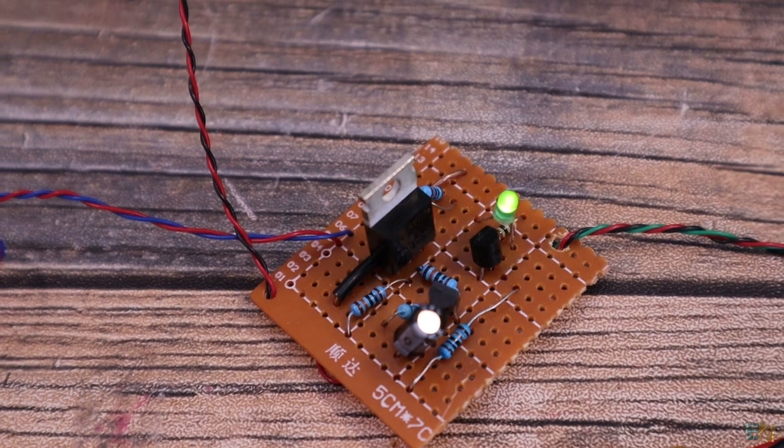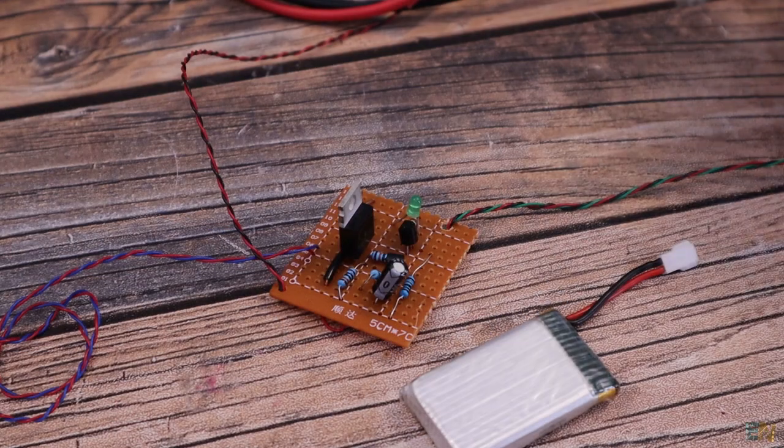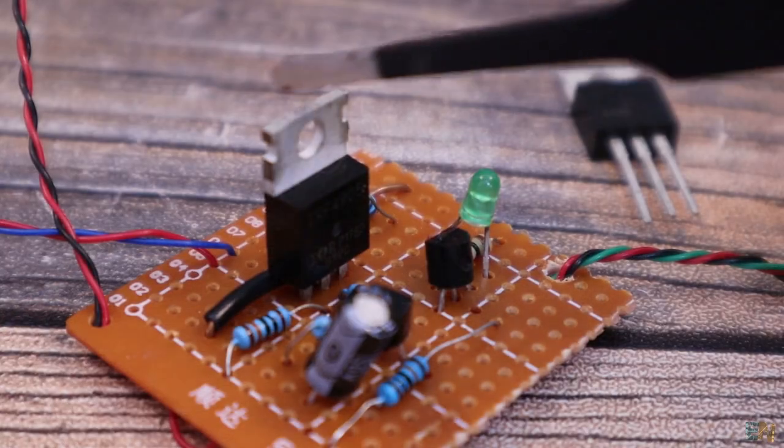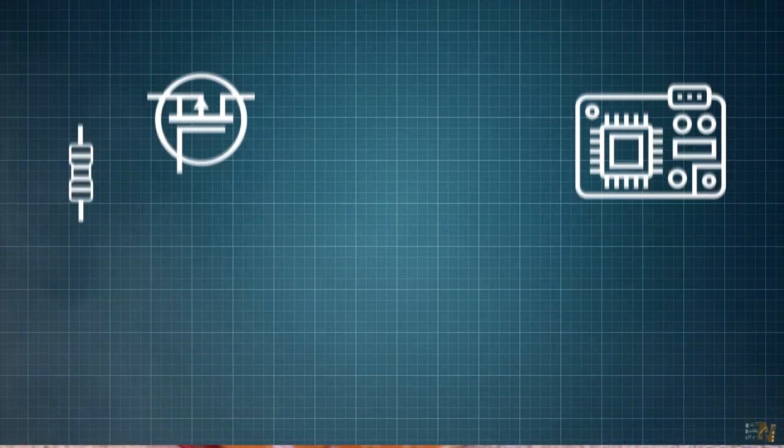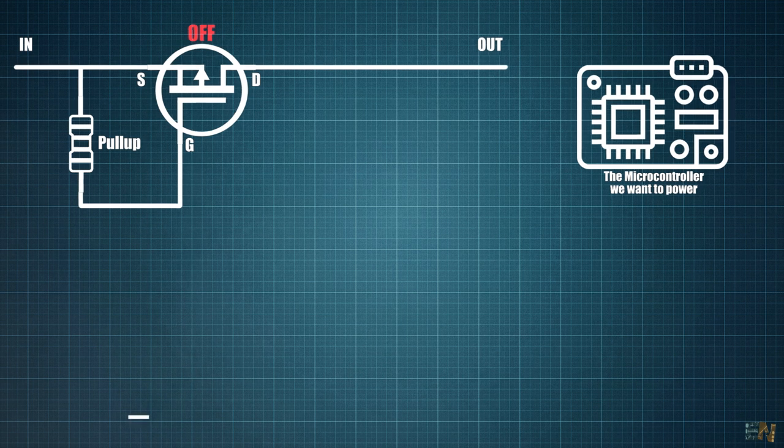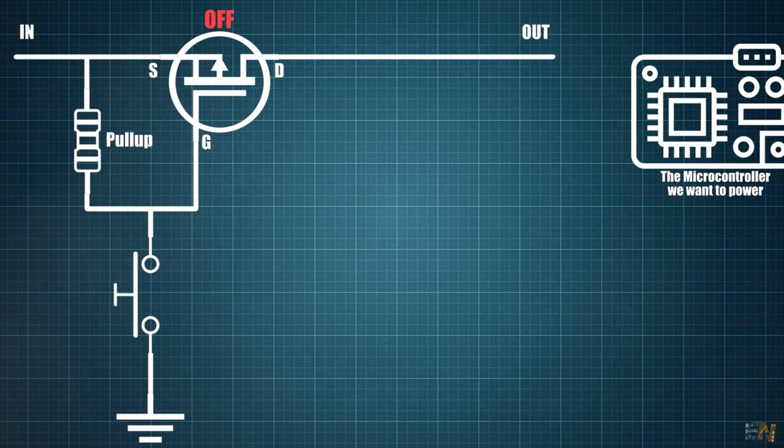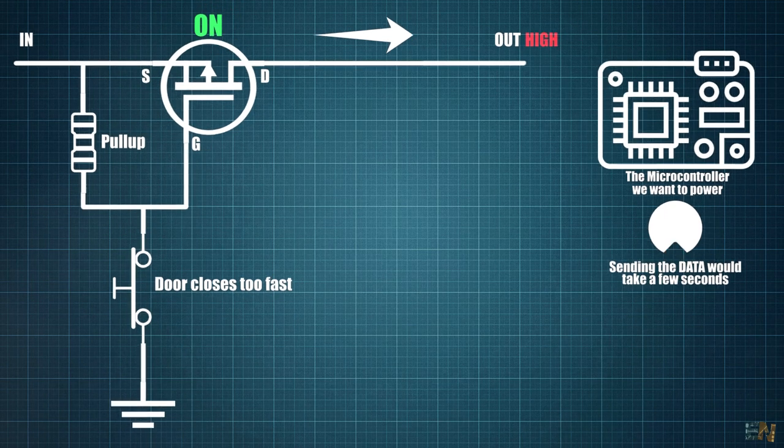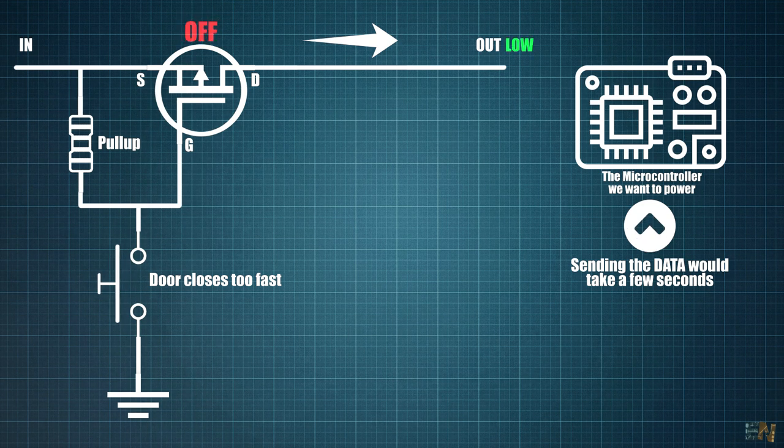So how does the latch circuit work and what components it uses? We use a MOSFET to enable the current flow between the battery and our microcontroller. This MOSFET needs to have a pull up resistor at the gate so it won't jump around between the ON and OFF state. If I connect the switch from the door detector to the gate of this MOSFET, this will be turned ON each time that the door is open.